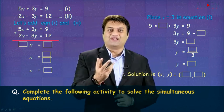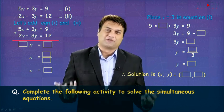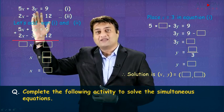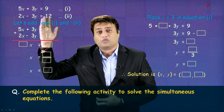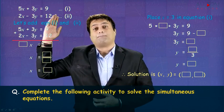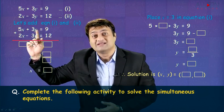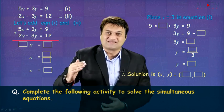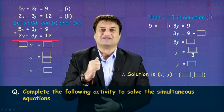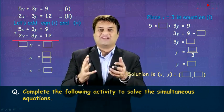After that to eliminate we either add or subtract. When the signs are same, we subtract. When the signs are different, we add. Now look at the signs of the variable y, the variable which we are supposed to eliminate. Now in the first equation it is plus 3y. In the second equation it is minus 3y. We need to add the two equations. So it's given here. Let's add equation 1 and 2. It is already given in the question.